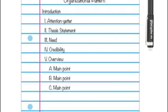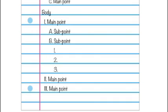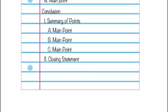The next step to your outline is to delve into your body paragraphs. Try to condense your main points, but be sure to add support wherever needed. Lastly, conclude your outline. Briefly review the points you made and provide a strong closing statement.